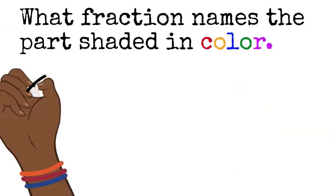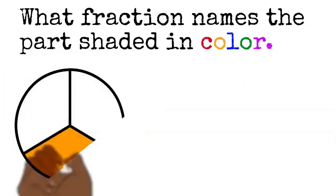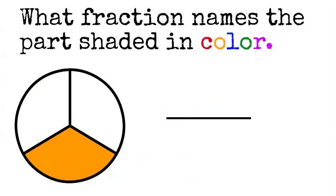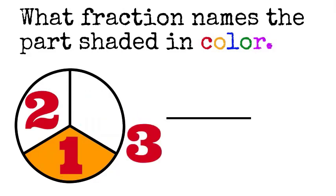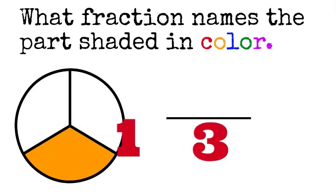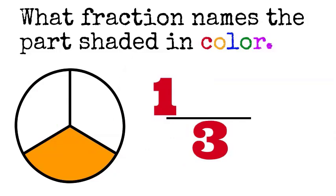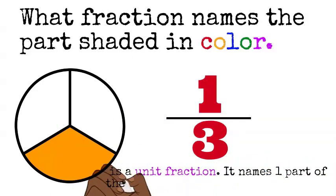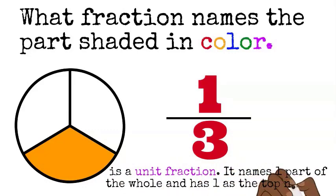Take a look at this fraction. Draw your bar again. And then you count all the total pieces, total equal pieces of the whole. There's three equal pieces, but there's only one shaded. So, this is one-third. One-third is a unit fraction. It names a part of the whole, one part of the whole, and has one as the top number.